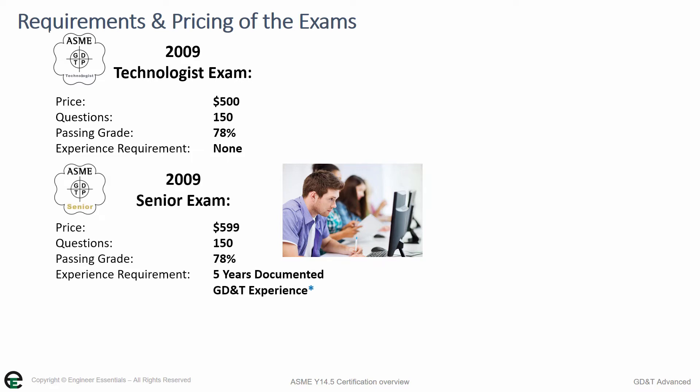For the senior level exam, the price is $99 more — it's $599. There are still 150 questions and the passing grade is still 78%. But in order to take this test, you need to show 5 years of documented GD&T experience.